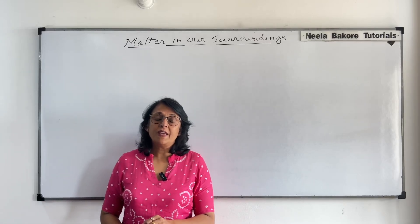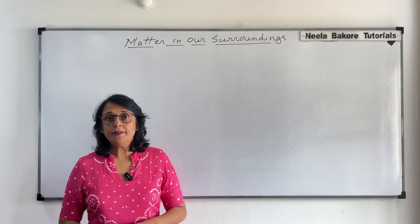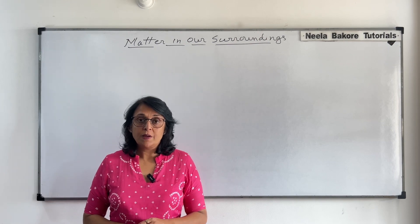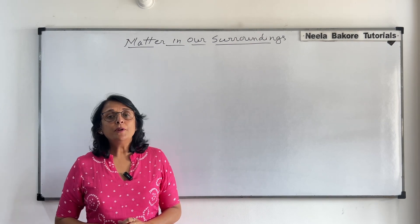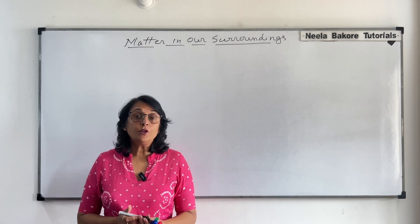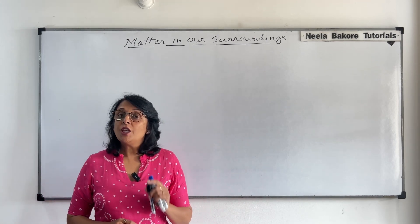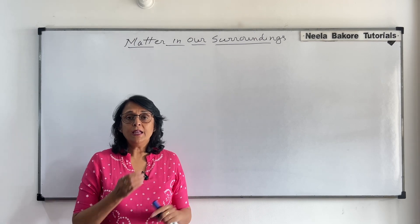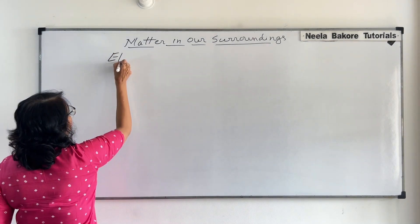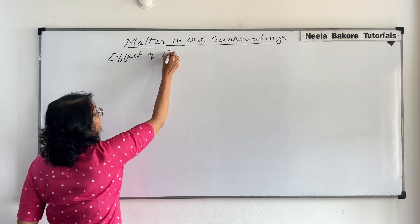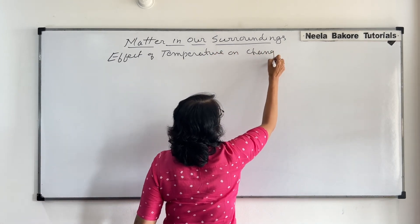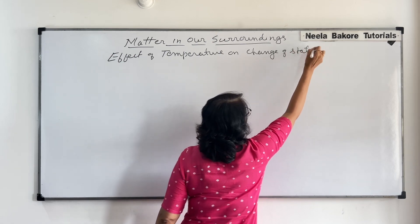Up till now, in this chapter, we have seen all three states of matter and how these states are interconvertible and what we call these processes. We have also discussed the properties of particles in solid, liquid and gases. Now we want to study the effect of temperature on the change of state.